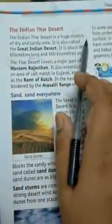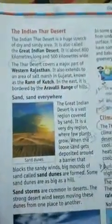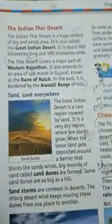The Indian Thar Desert is a huge stretch of dry and sandy area. It is also called the Great Indian Desert. It is about 800 km long and 500 km wide, and covers a major part of western Rajasthan.